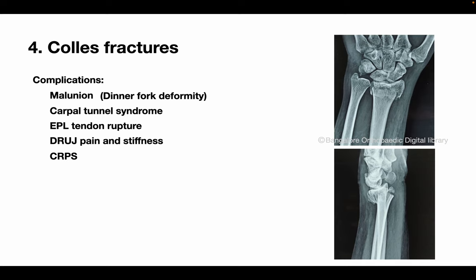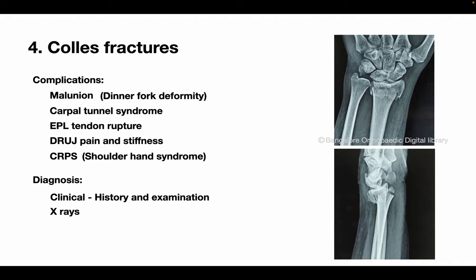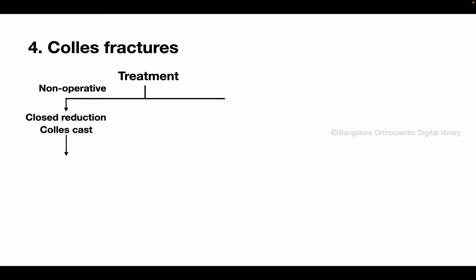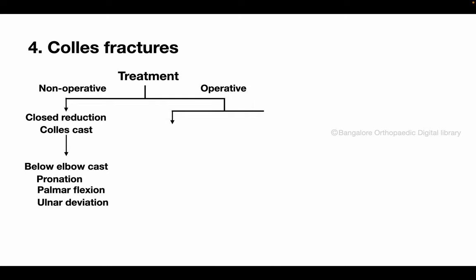Localized autonomic dysfunction can lead to complex regional pain syndrome, which may manifest as shoulder and hand stiffness. Diagnosis is straightforward with classical history, clinical findings and X-rays. Fractures that are undisplaced or minimally displaced, and in patients who are poor surgical candidates, are treated non-operatively in a Colles cast after closed reduction if necessary. A Colles cast is a below-elbow cast with the forearm in pronation, wrist in palmar flexion and ulnar deviation. A displaced fracture can be treated by closed reduction with percutaneous K-wire fixation or by open reduction internal fixation with plates and screws.